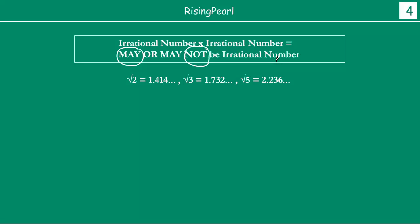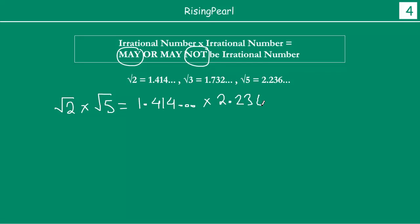Let's take square root 2 and multiply it by square root 5. Square root 2 is approximately 1.414... and square root 5 is 2.236... When you multiply these, you get something like 3.162... This part is non-terminating and non-repeating, so the entire number is an irrational number.